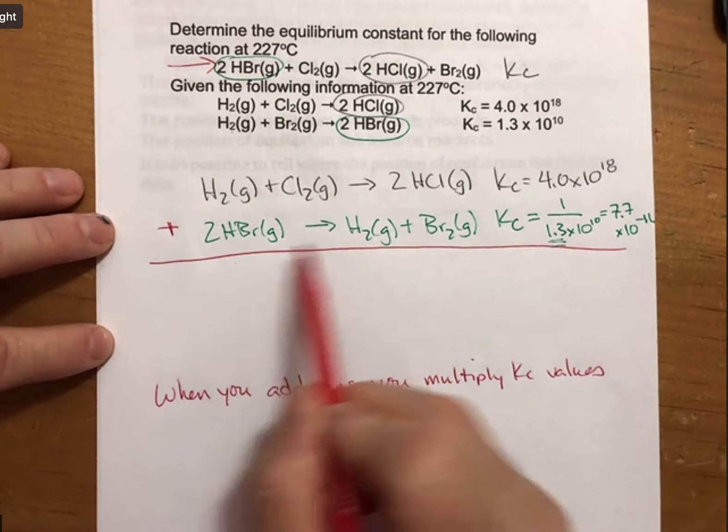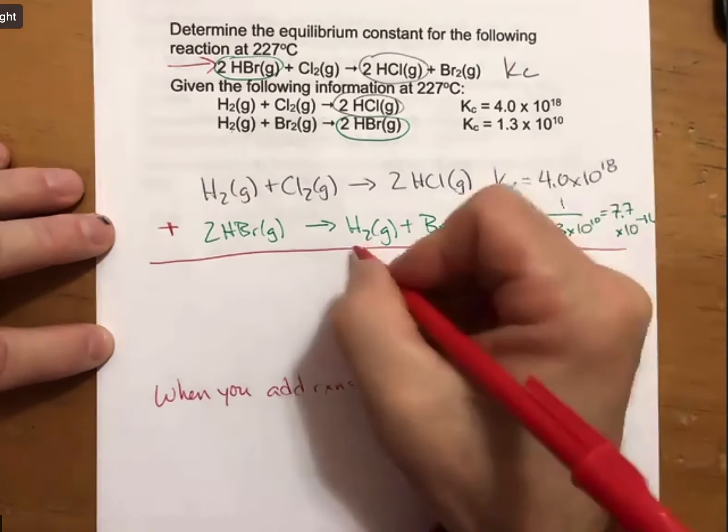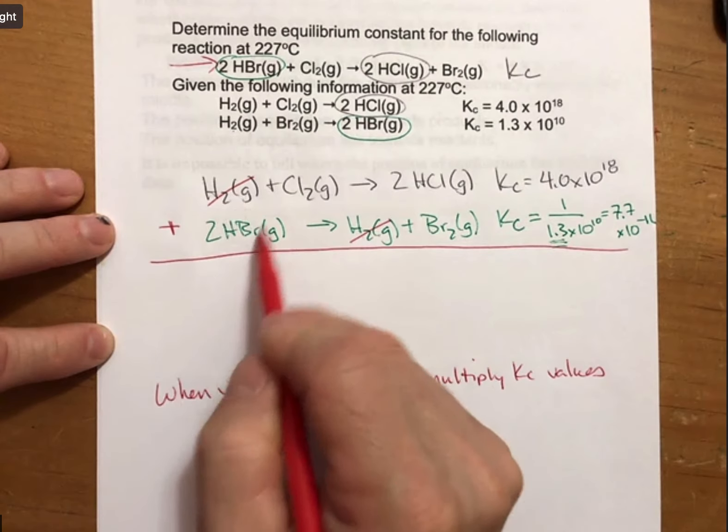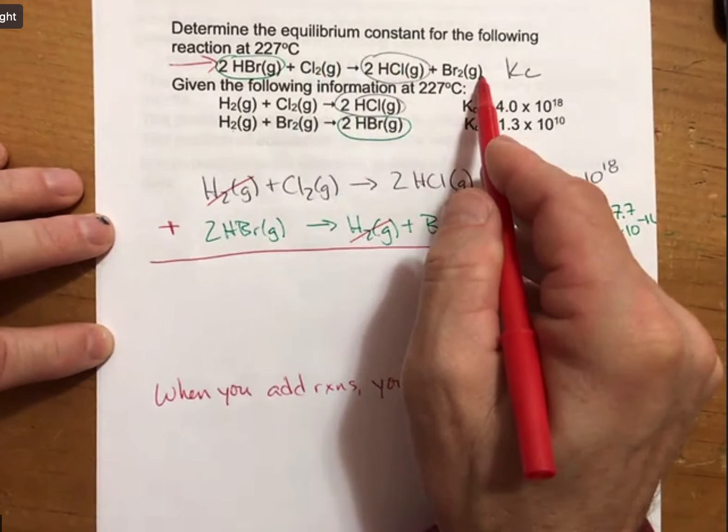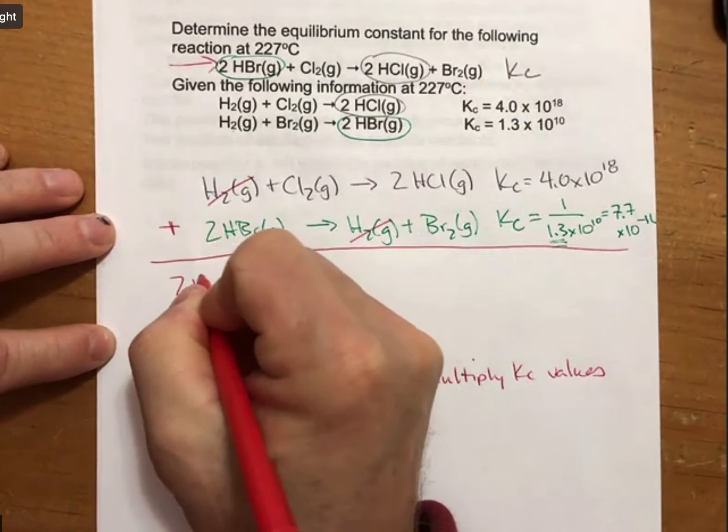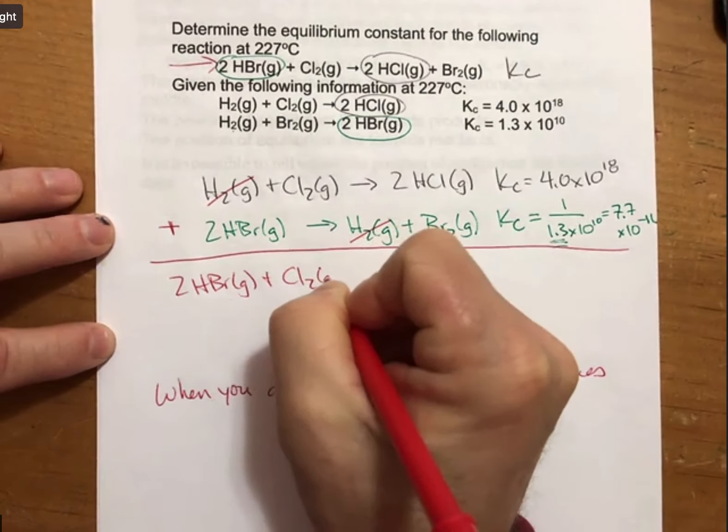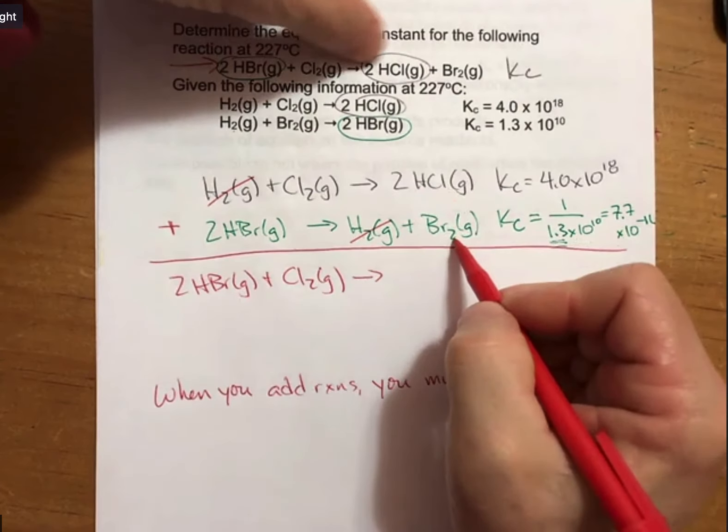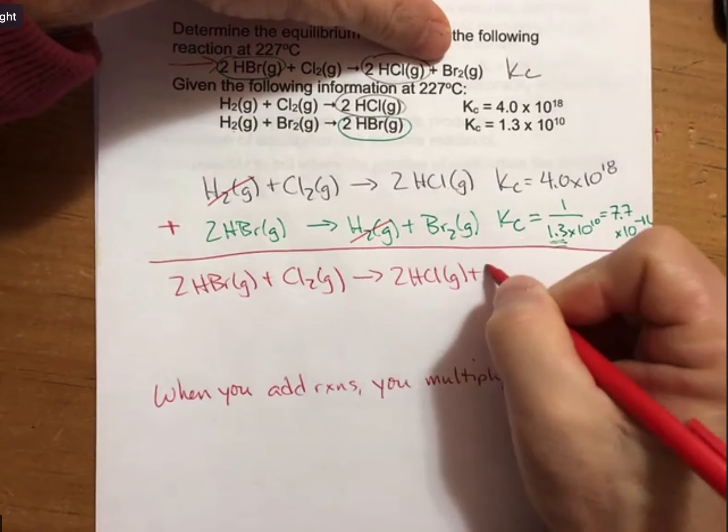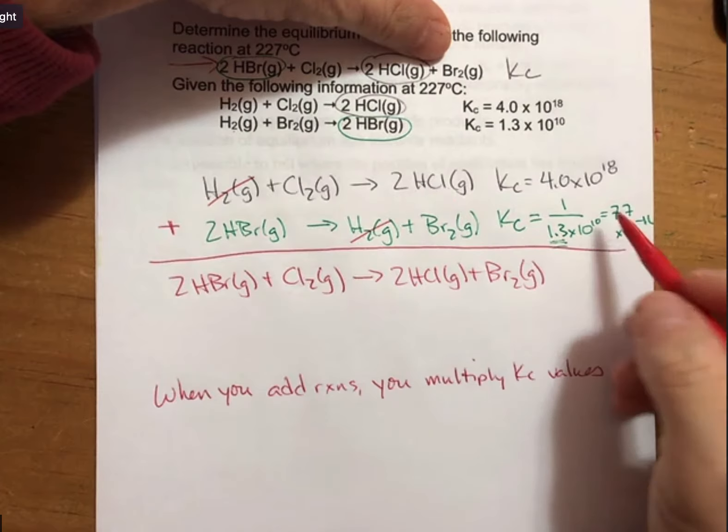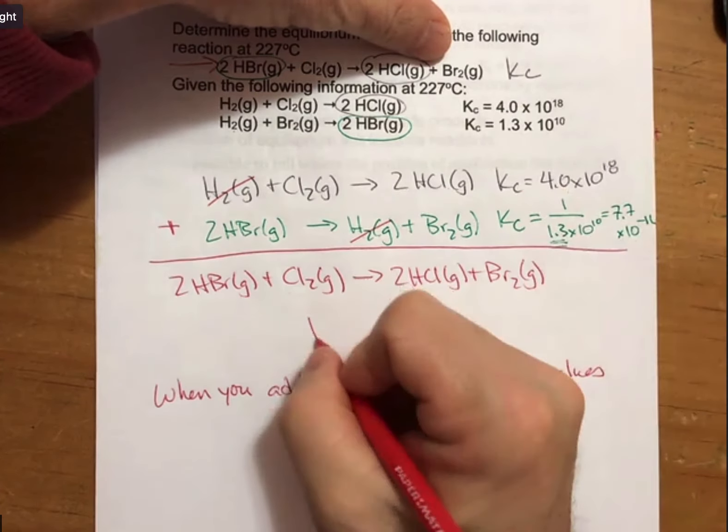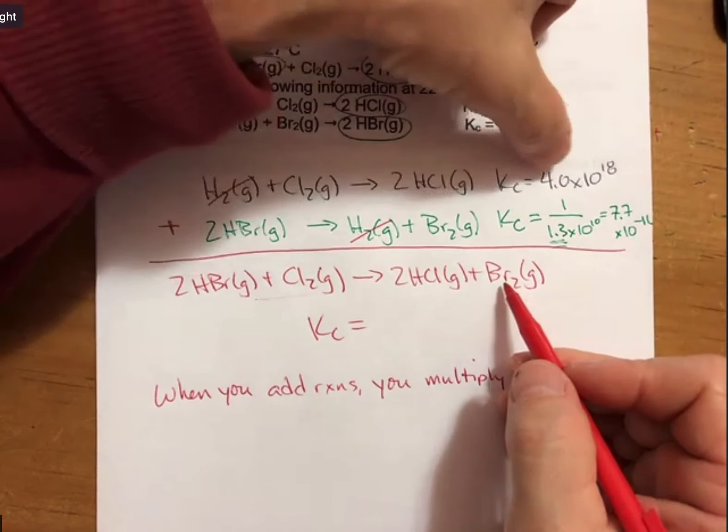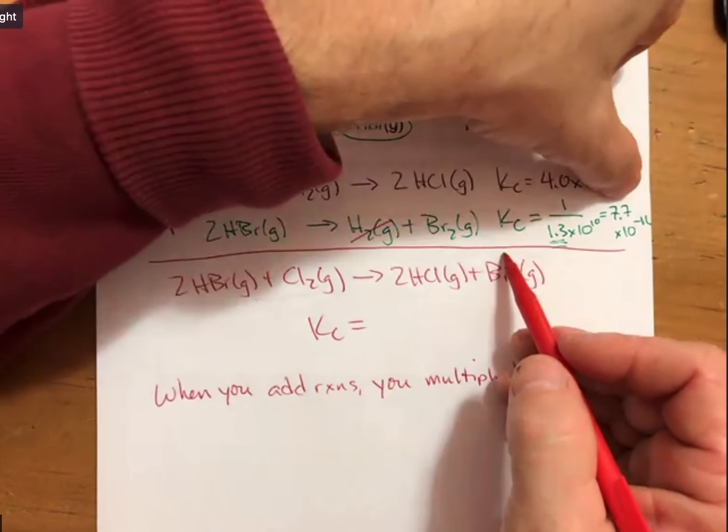You can also cross things out that are on both sides. I have H2 as a product, I have H2 as a reactant. That is going to leave me with the reaction I'm trying to create up top here. I have my 2HBr, my chlorine, I have my 2HCl, and my bromine. What I'm going to do is, Kc for the reaction in red is going to equal the first reaction's Kc value times the second reaction's Kc value.